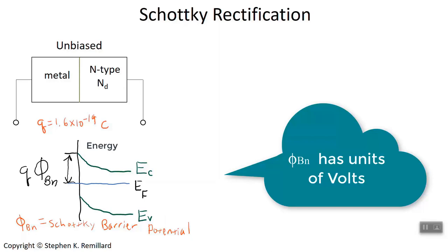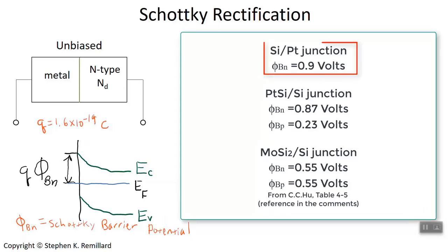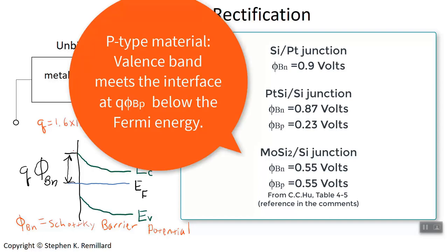The Schottky barrier height is unique to the combination of metal and semiconductor — for example, silicon and platinum have one specific value for φ_bn. The Schottky barrier potential is the height of the hill that electrons climb as they travel from left to right toward the interface. If this were a p-type semiconductor, the bands would bend downward, still meeting the interface at q·φ_bp below the Fermi level, where φ_bp is the barrier height for holes.